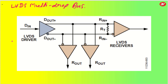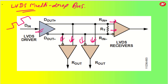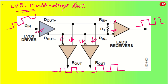Coming back to multipoint: LVDS can have multi-drop buses. Let's say one LVDS driver is there. Instead of having one LVDS receiver, we can have three LVDS receivers. So one bus goes here, another bus goes here, and one more bus goes here — this is how you are going to receive three outputs. One signal, one clock source, can get converted into three outputs. This is how you are going to have a clock distribution setup.